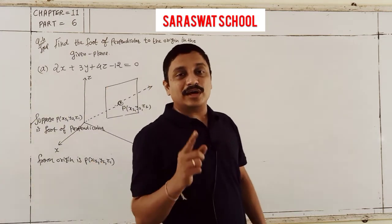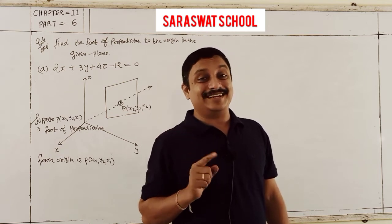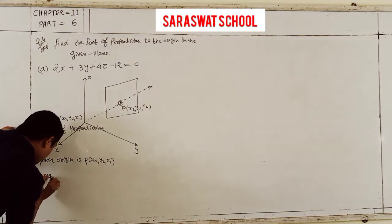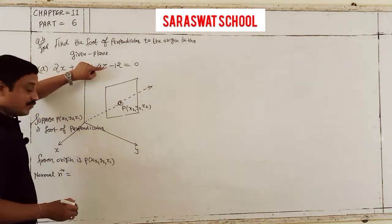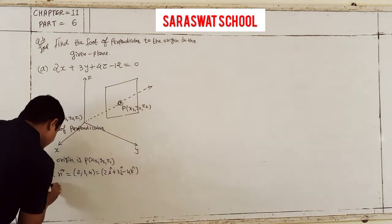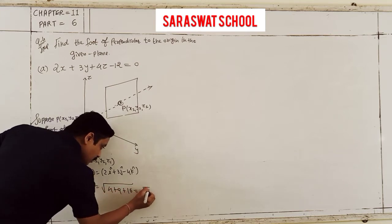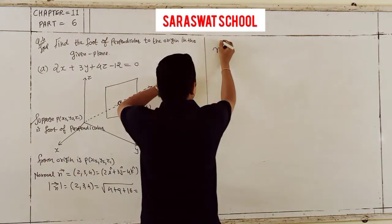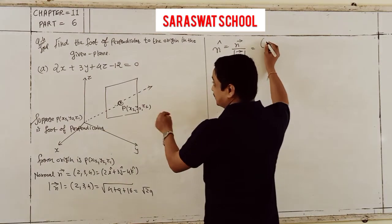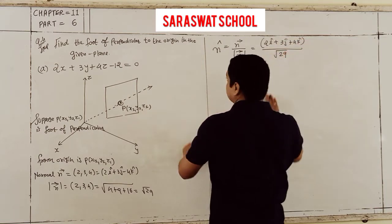The foot of perpendicular formula is (LD, MD, ND) where LMN are direction cosines and D is the perpendicular distance from the origin. The normal here is (2, 3, 4), giving the vector 2i plus 3j plus 4k. Its magnitude is root of (4 plus 9 plus 16) which is root 29. So n-cap is (2i plus 3j plus 4k) upon root 29, giving direction cosines L, M, N.